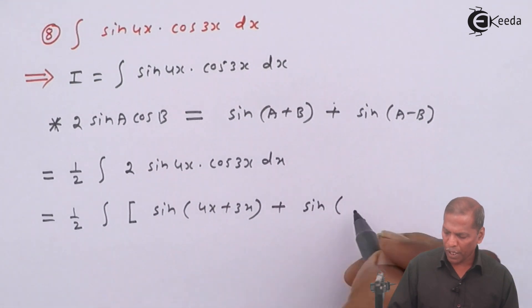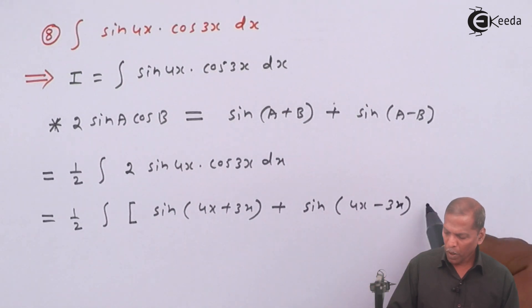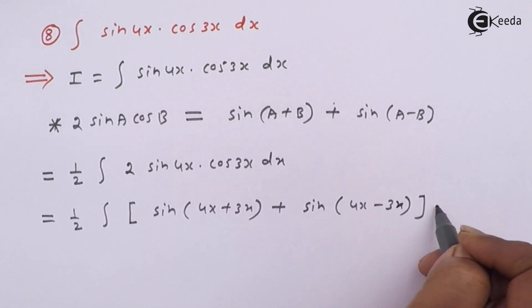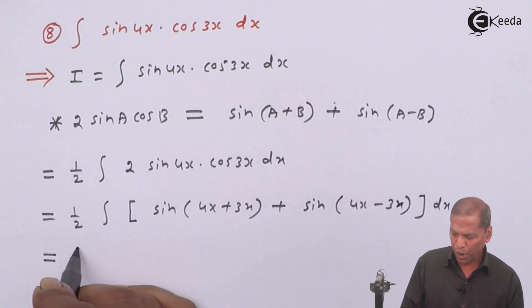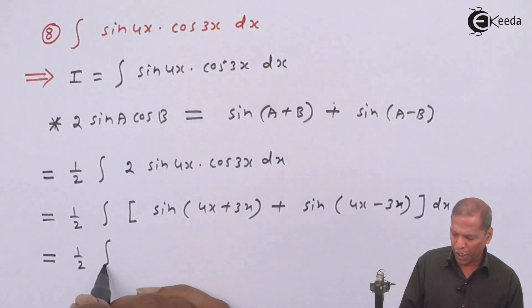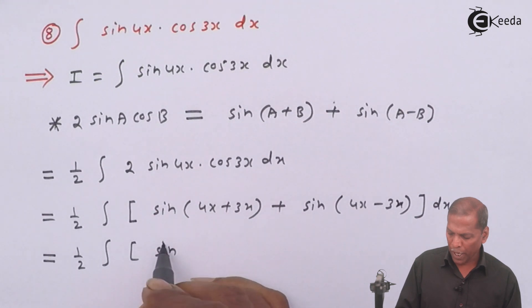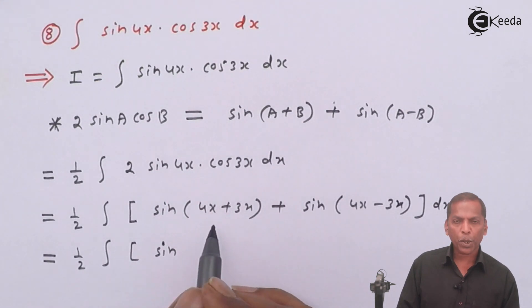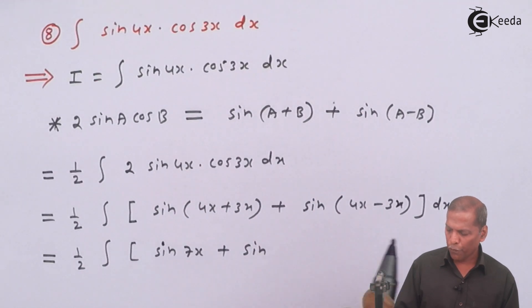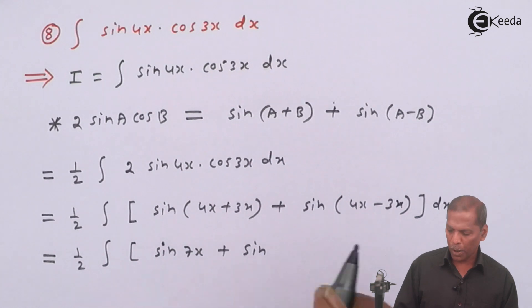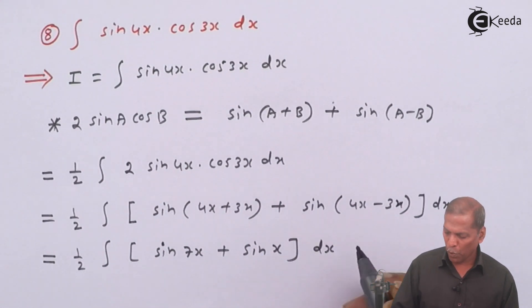That gives us (1/2) integral of [sin(7x) + sin(x)] dx, since 4x plus 3x gives 7x and 4x minus 3x gives x.